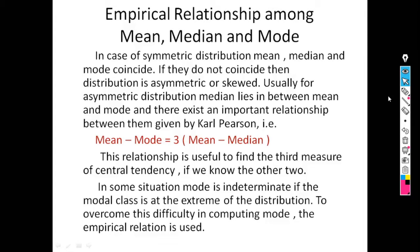Next is the empirical relationship among mean, median, and mode. In case of a symmetric distribution, mean, median, and mode coincide. If they do not coincide, the distribution is asymmetric or skewed. For asymmetric distributions, median lies in between mean and mode, and there exists an important relationship between them given by Carl Pearson.